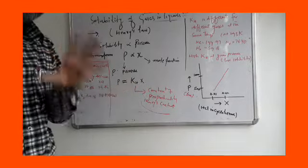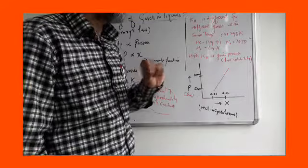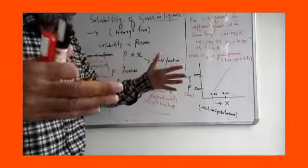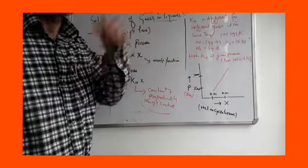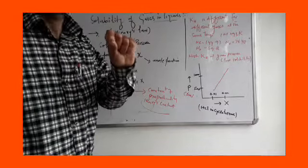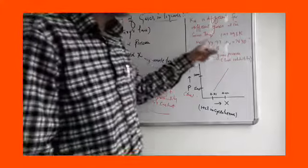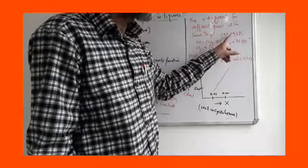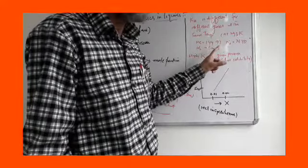KH is Henry's constant. It is different for different gases at the same temperature. When the gas changes, KH will be different — meaning KH depends upon the nature of the gas. At the same temperature, KH has different values for different gases.